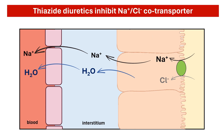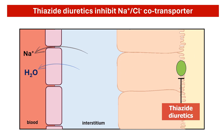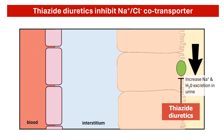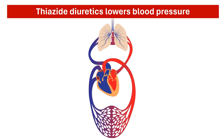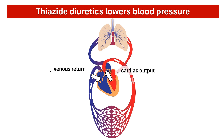Thiazide diuretics inhibit the sodium chloride cotransporter. By blocking it, thiazide diuretics prevent the reabsorption of sodium from the urine back into the bloodstream. This increases sodium and water excretion in the urine and decreases blood volume. A decrease in blood volume reduces venous return, which decreases cardiac output, and ultimately decreases blood pressure.